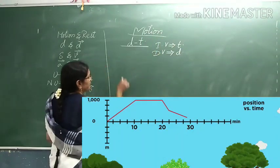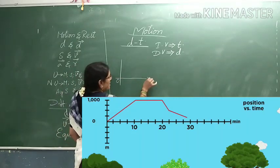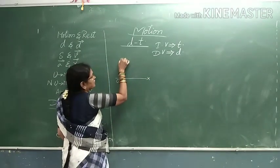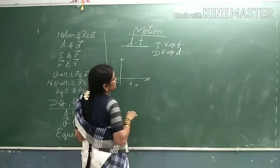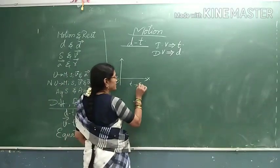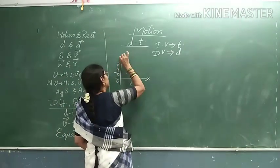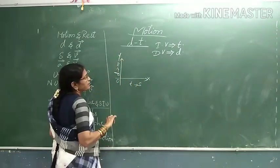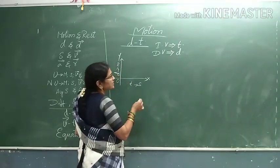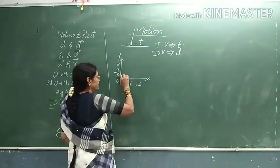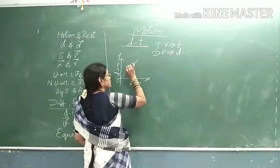Coming to the distance time-graphs. The first graph — what we discussed? In the first graph, we have discussed what it gives already. You have studied in class 7. Again, we are repeating. Distance time-graphs give the kind of motion. What is the type of motion?